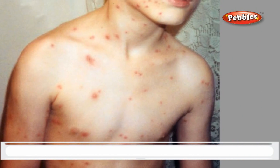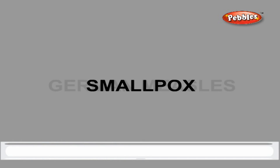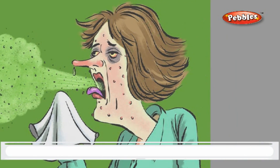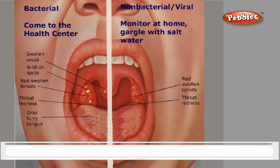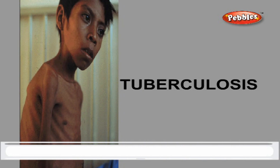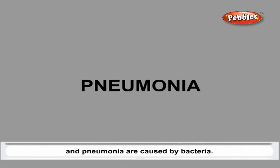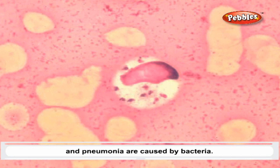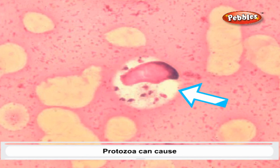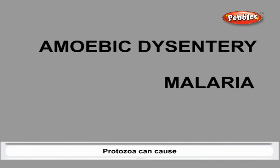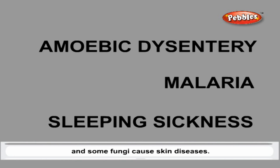Typhoid, diphtheria, tuberculosis, cholera, and pneumonia are caused by bacteria. Protozoa can cause amoebic dysentery, malaria, and sleeping sickness.